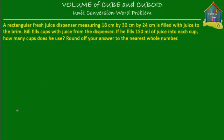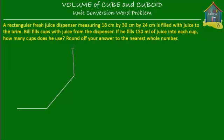So we start solving the problem. Let's make this rectangular fresh juice dispenser. We make this cuboid. This is 18 centimeters — we take that as the length. Then the breadth is 30 centimeters, so it's longer. And the height is 24 centimeters.